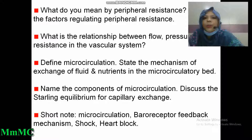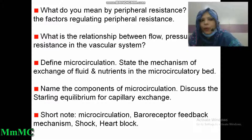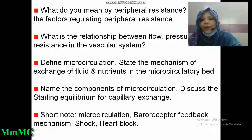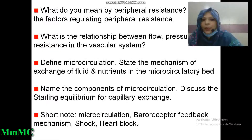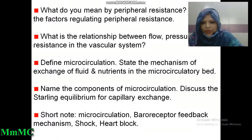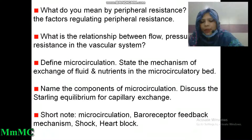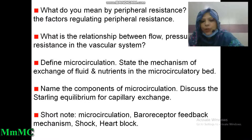What do you mean by peripheral resistance and what are the factors regulating it? What is the relationship between flow, pressure, and resistance in the vascular system? Define microcirculation. State the mechanism of exchange of fluid and nutrients in the microcirculatory bed. Name the components of microcirculation. Discuss the Starling equilibrium for capillary exchange. Short notes on microcirculation, baroreceptor feedback mechanism, shock, and heart block.